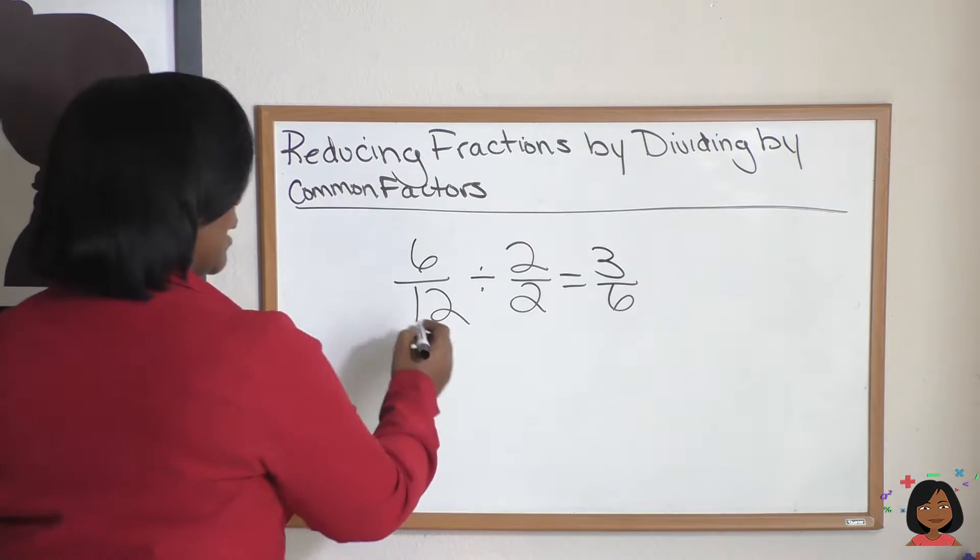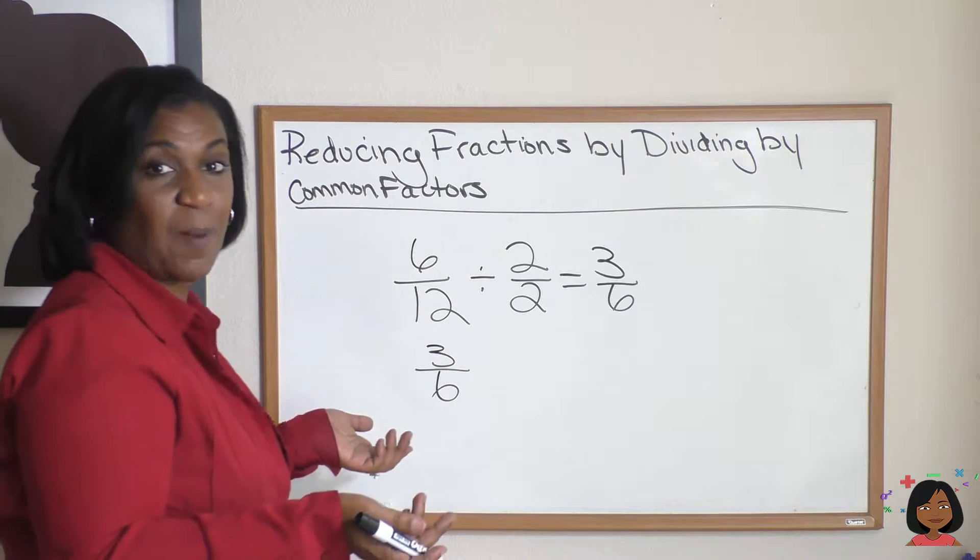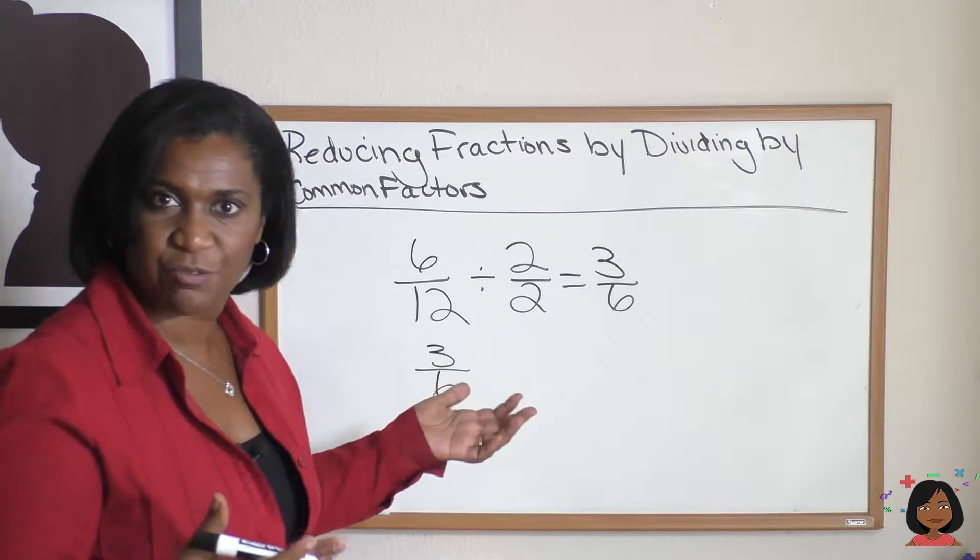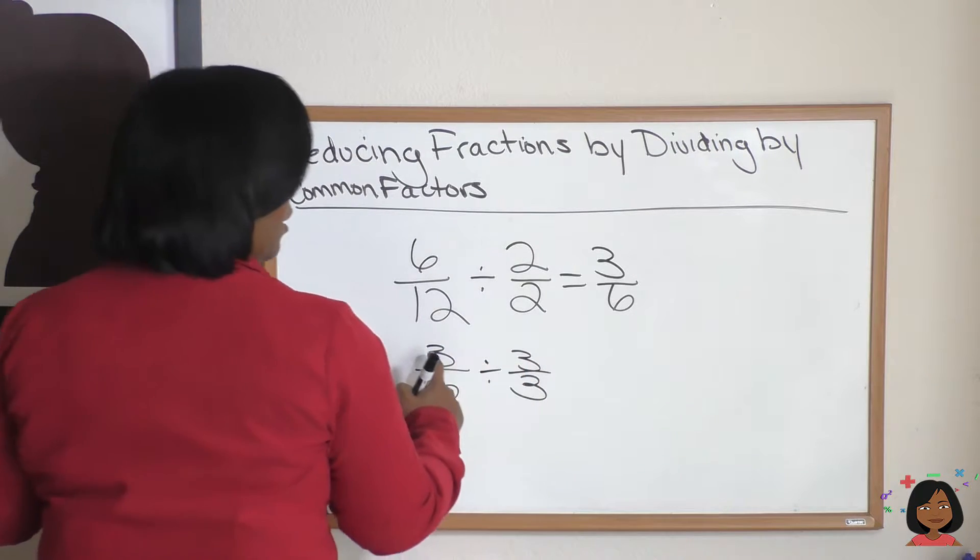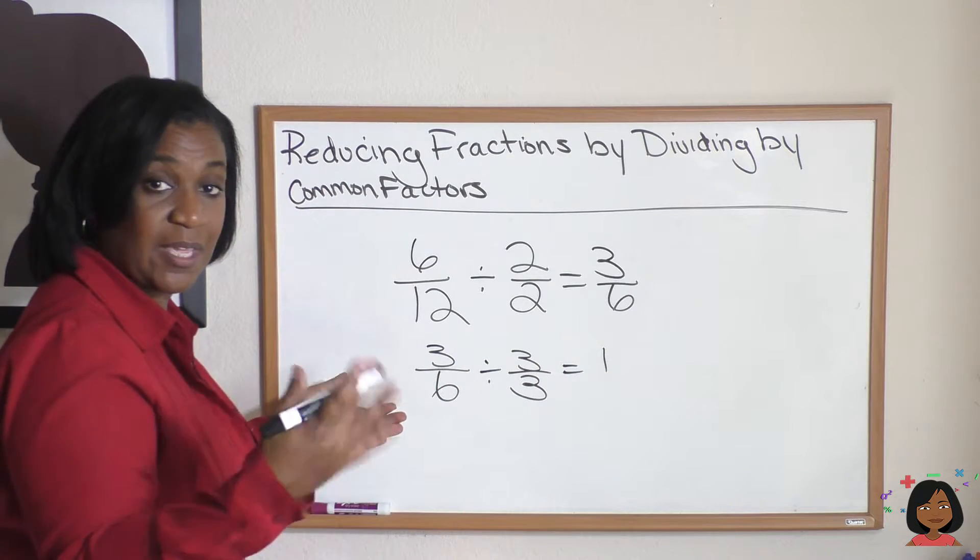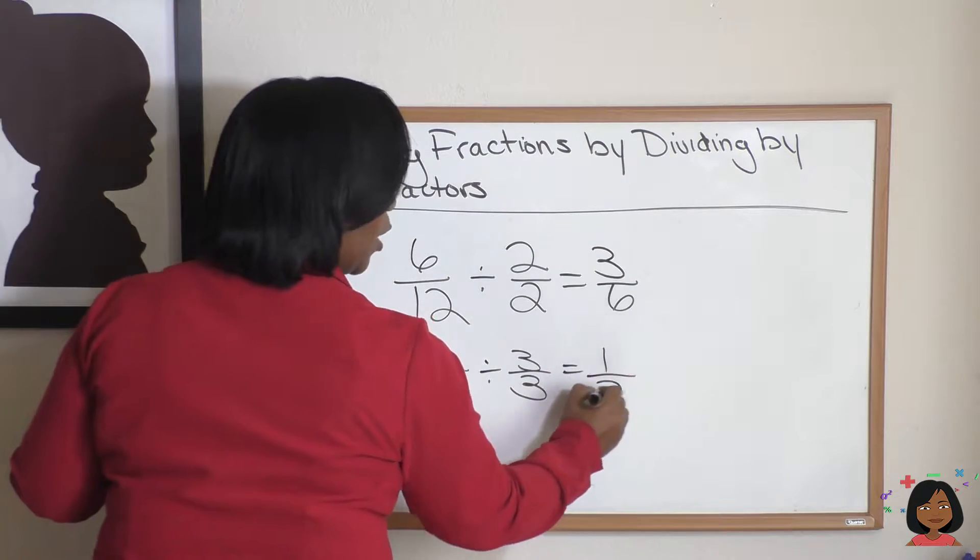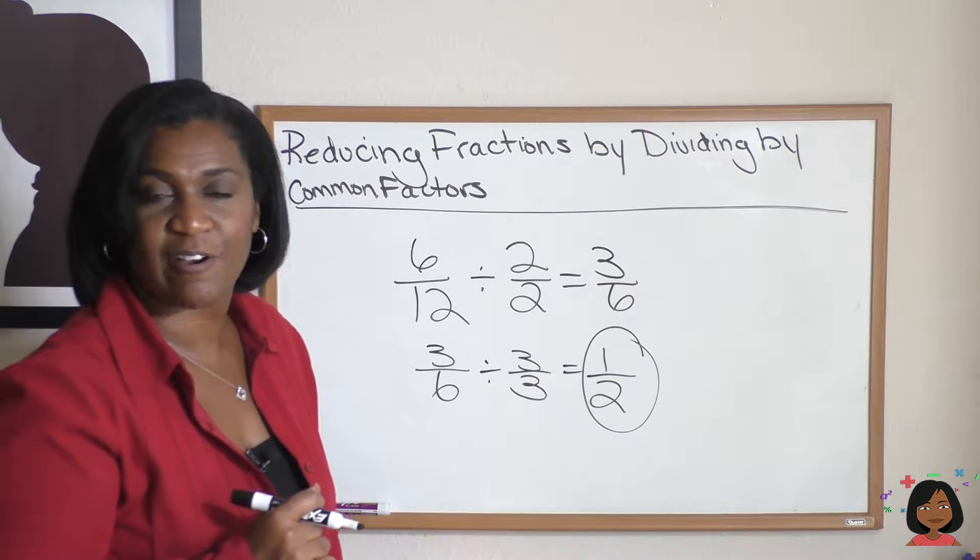I'm going to do it over here. 3, 6. A number that goes into both of these is 3. So let's divide the top and bottom by 3. 3 divided by 3 equals 1. 6 divided by 3 equals 2. Can we go any further? Nope, we can't. 1/2 is our answer.